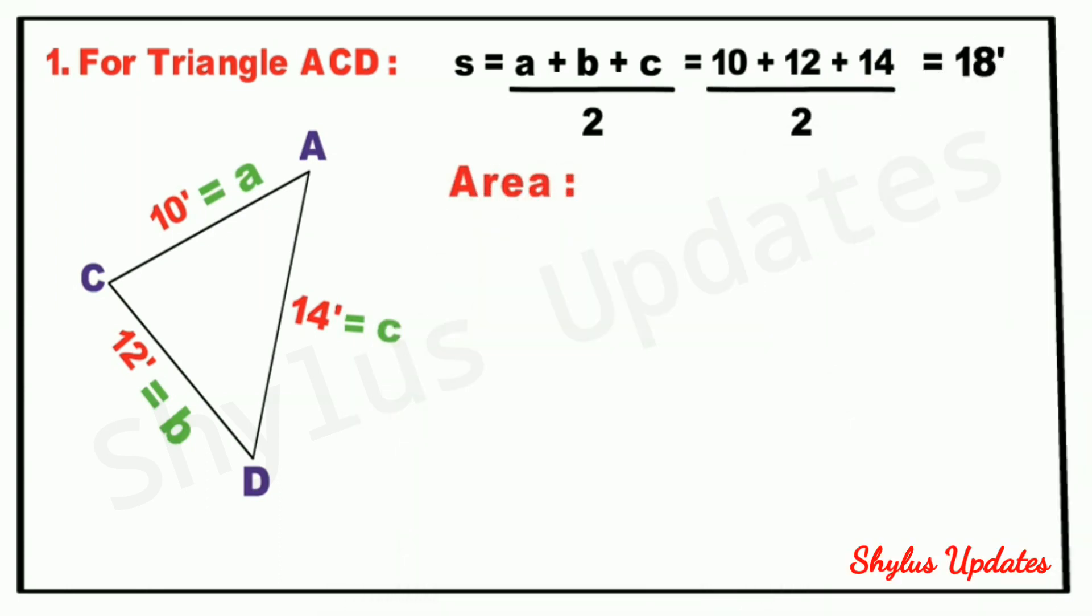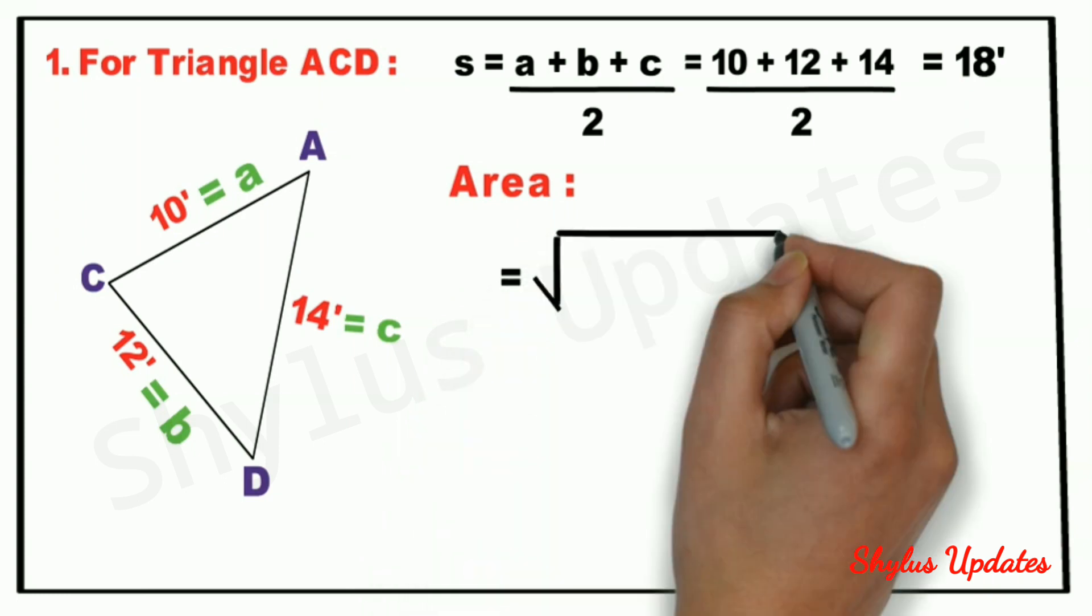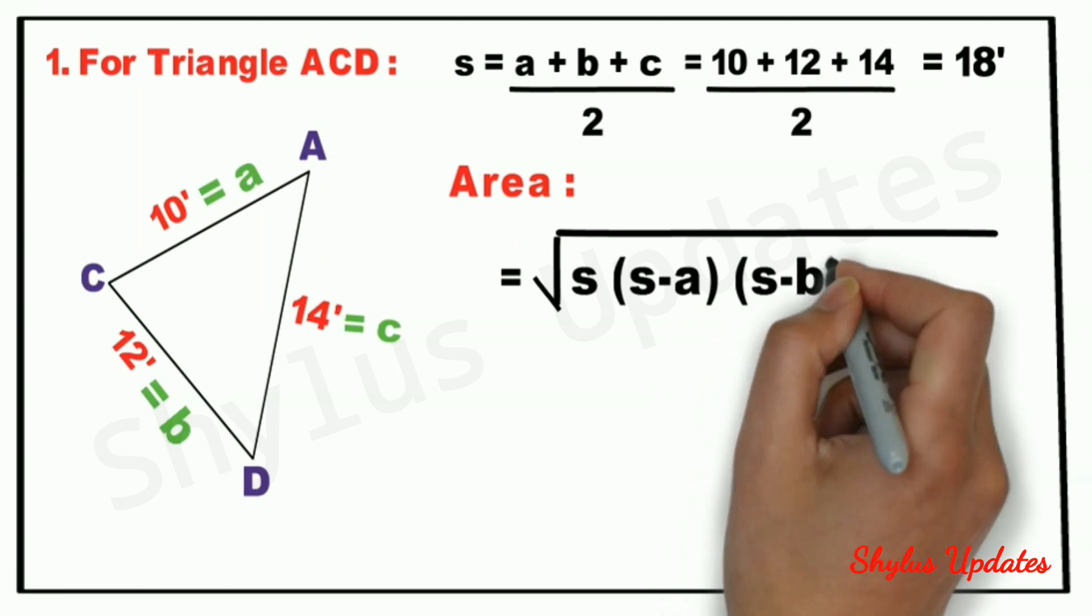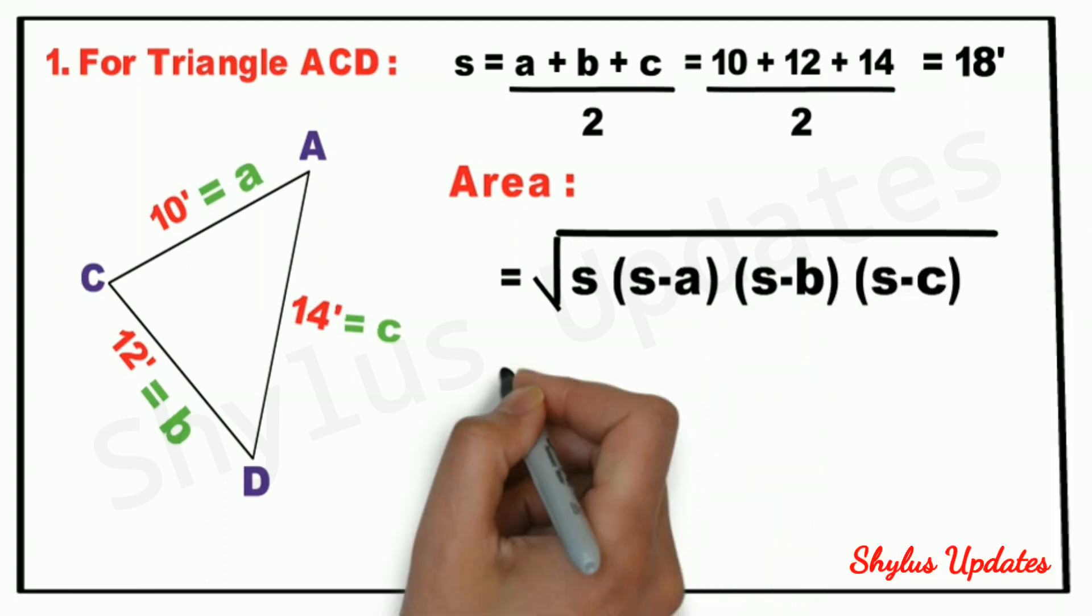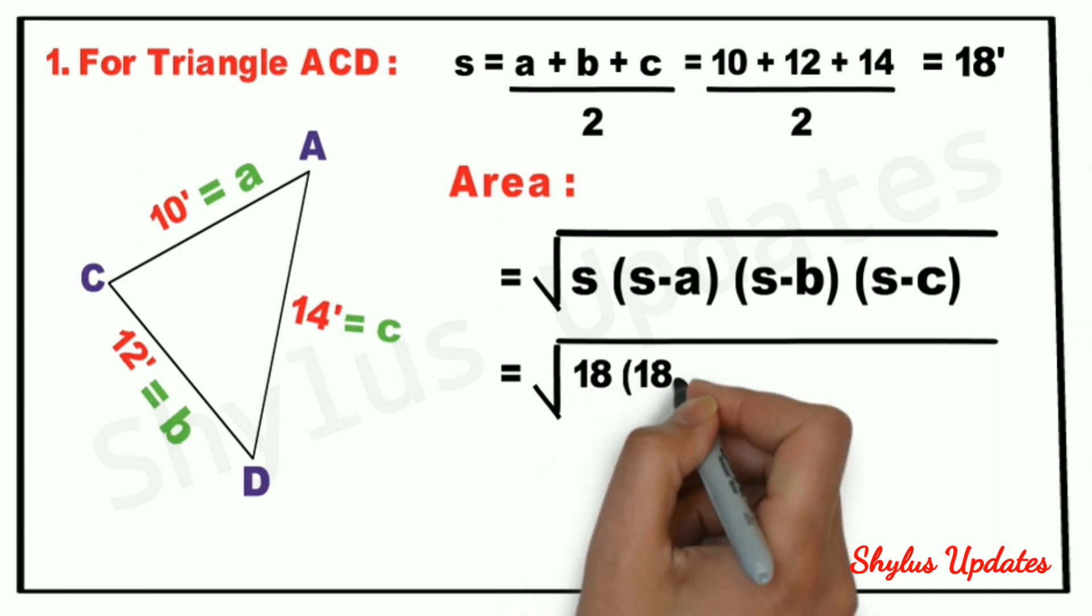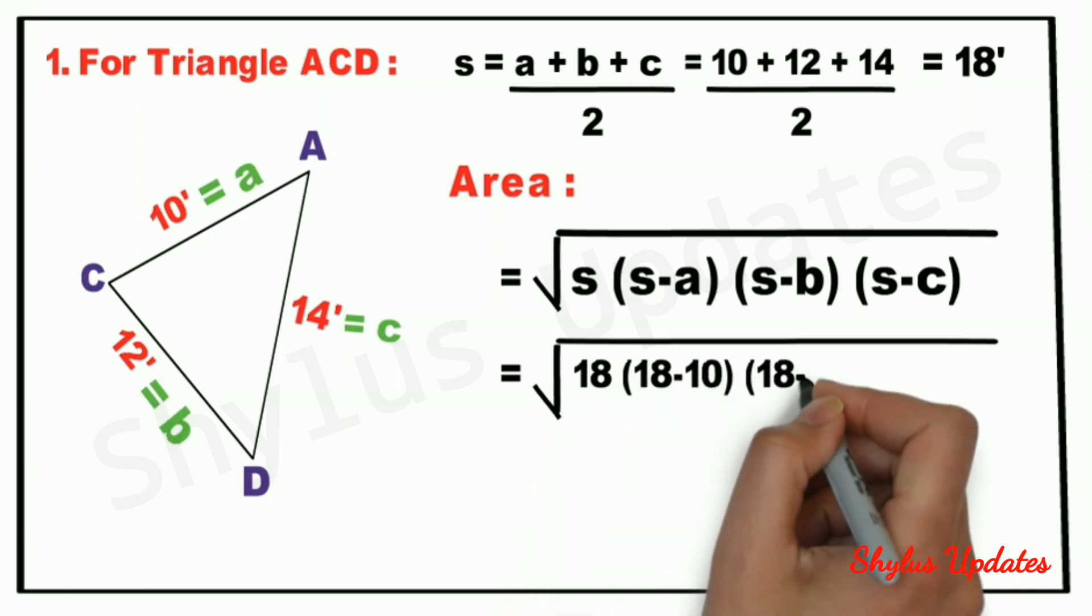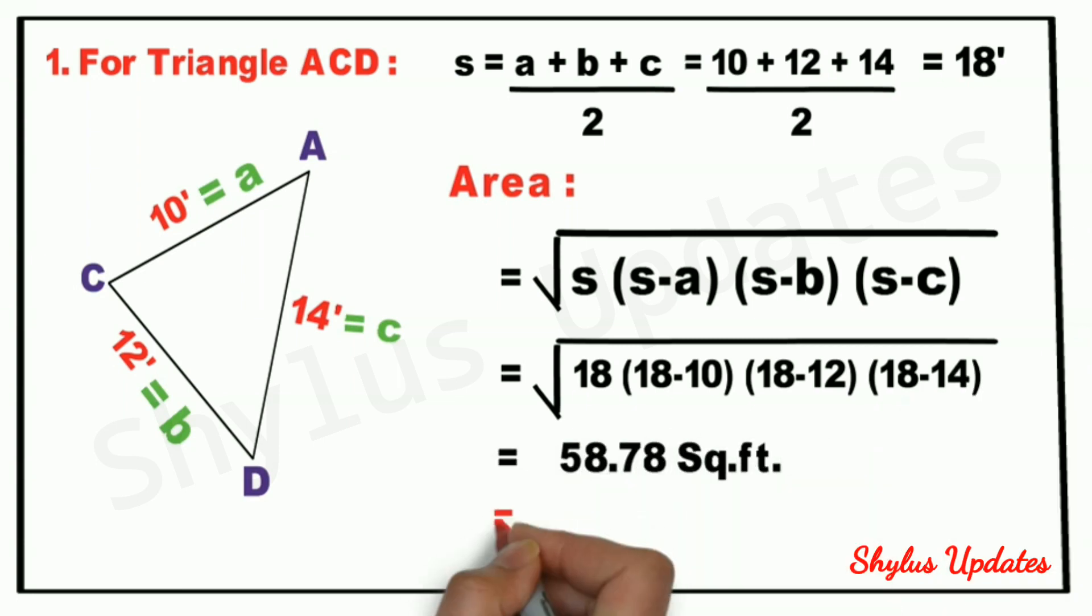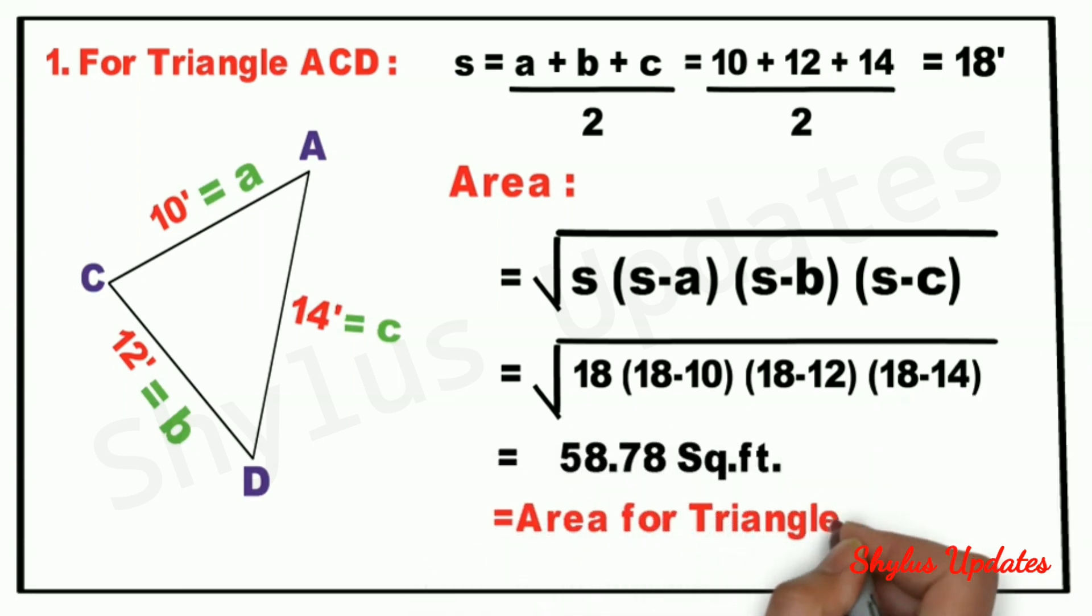To calculate area, use the formula: root of s into s minus a into s minus b into s minus c. Now substitute all the known values, and we get the answer 58.78 square feet. This is the area for triangle ACD.